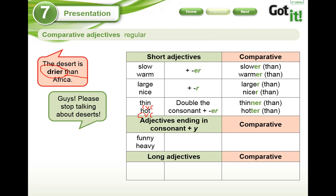And what about adjectives that finish with the letter Y? It doesn't matter how many consonants or syllables they have. As we could see, the adjectives in the first part have one syllable — 'large,' 'nice,' 'hot.' Here we have two syllables: 'funny,' 'heavy.' So the Y has to change to I-E-R. For example: 'funnier than' — Togo is funnier than the teacher. And my laptop is heavier than yours.